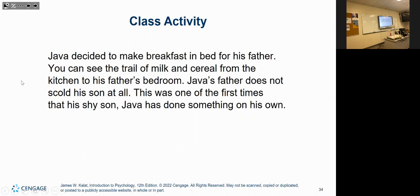Java decided to make breakfast in bed for his father — you can see the trail of milk and cereal from the kitchen to his father's bedroom. His father does not scold him at all, since this was one of the first times his shy son did something on his own. That's early childhood: autonomy versus shame. Yelling at him might shame him into not wanting to do that again, which isn't what we want since he's already shy.